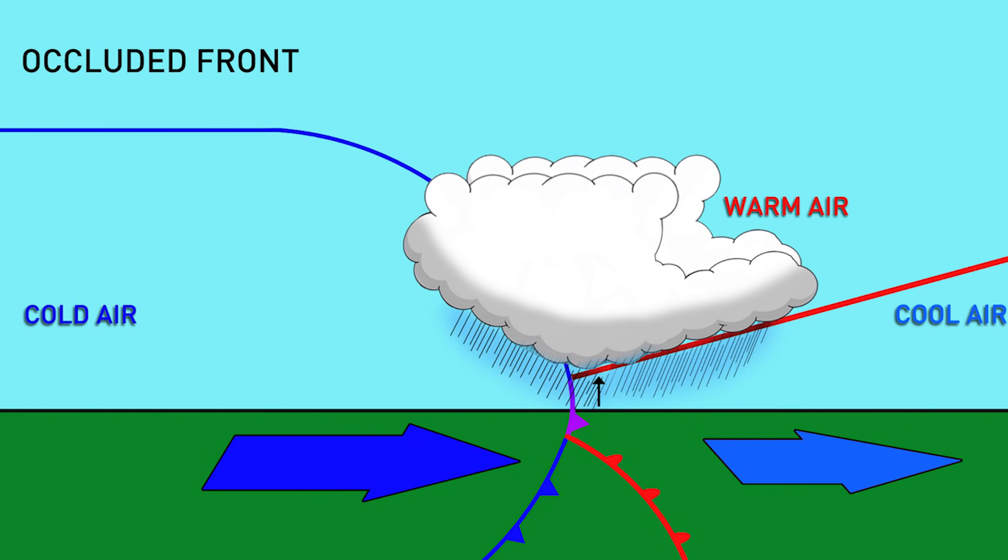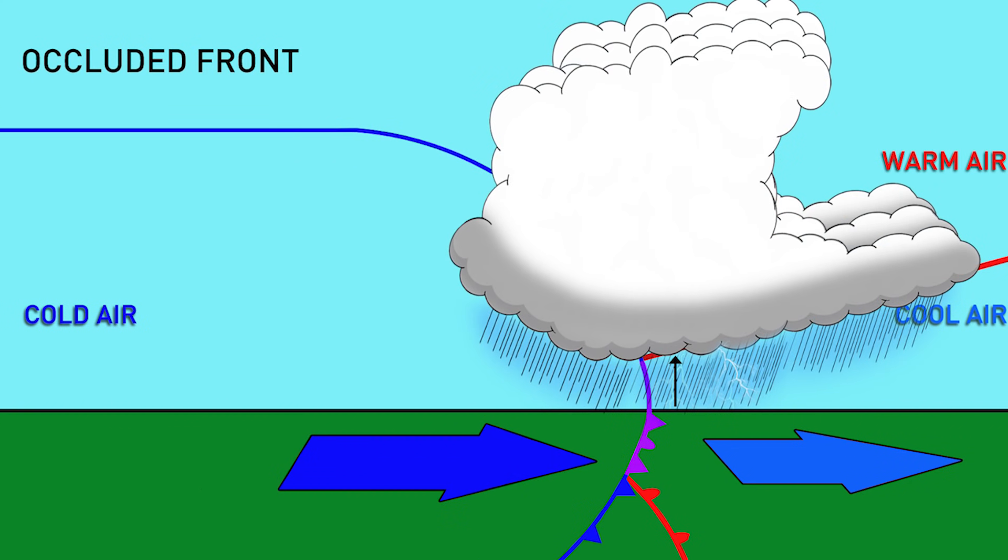Due to the combo of cold front and warm front conditions, this often results in a combination of the weather from both as well, producing active, sometimes severe weather along the occlusion.